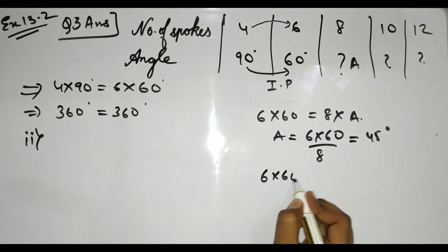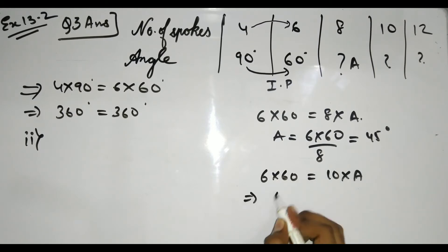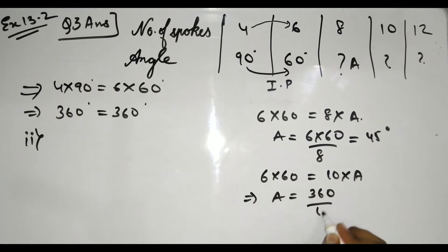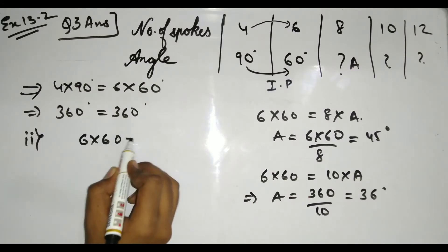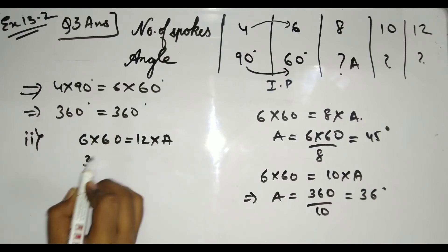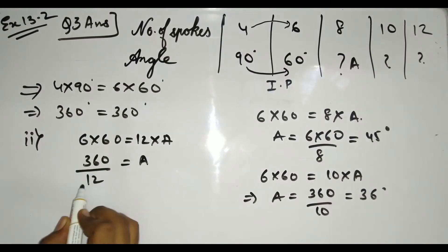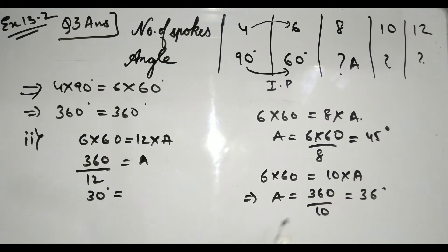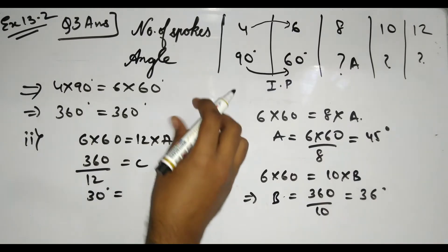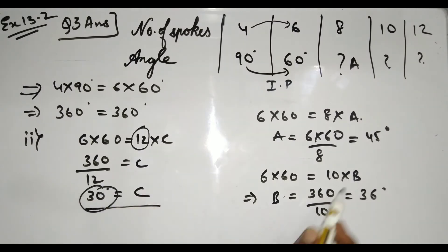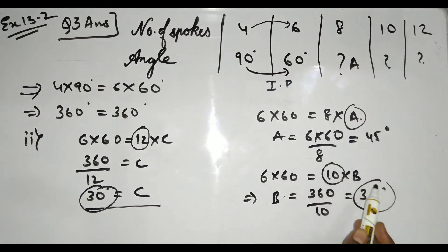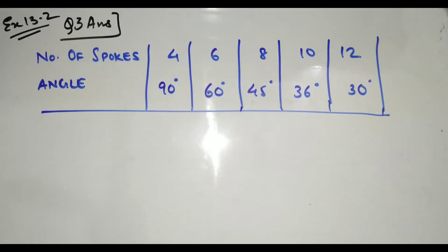For 12 spokes: 6 × 60 = 12 × a, so a = 360 ÷ 12 = 30°. So the completed table gives: 8 spokes → 45°, 10 spokes → 36°, 12 spokes → 30°.